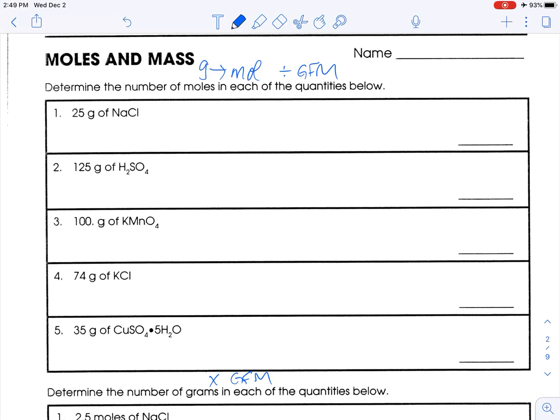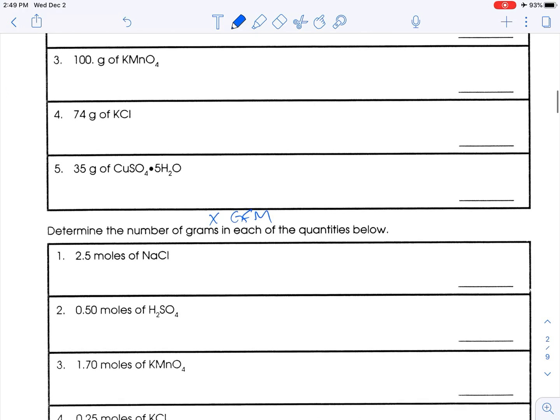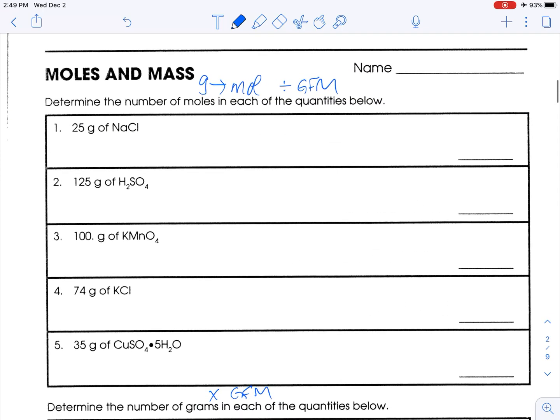Alright, so the first thing we'll need to do is figure out the GFM of all these. Thankfully it's the same compound so we'll only have to do that one time. To calculate GFM you look on the periodic table. Sodium is 23, chlorine is 35. We add them up and you get a mass of 58 grams per mole. So 25 grams divided by the GFM, or times one mole over 58 grams. 25 divided by 58 gives you a number. If we're going to round to sig figs we need two sig figs. So 0.43, and the units for all these are going to be moles.